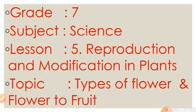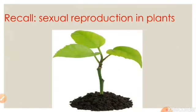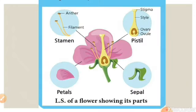Namaste children, welcome to our science class. Can anybody say what we have learned from our last science class? Yes, we have learned about reproduction in plants as well as the types of reproduction in plants. We also learned the parts of a flower. The four main parts of a flower are sepal or calyx, petals or corolla, stamen or androecium, and pistil or gynoecium.